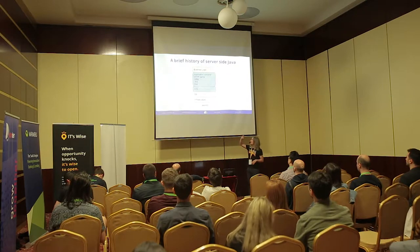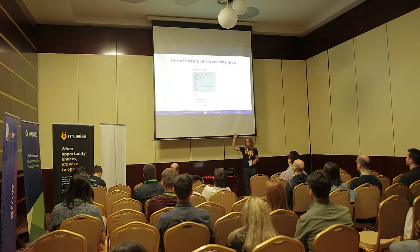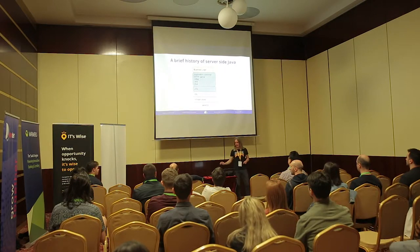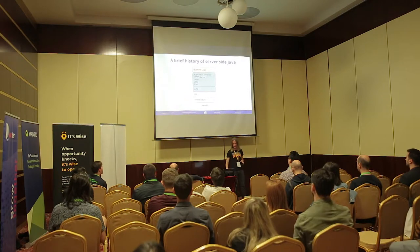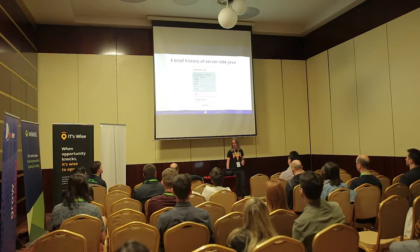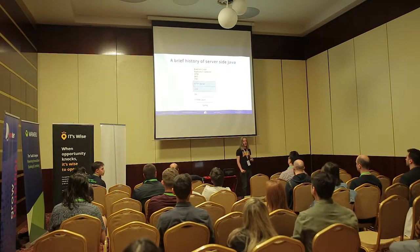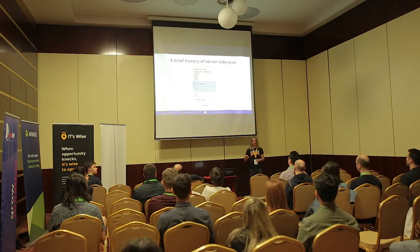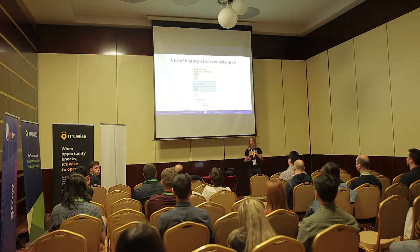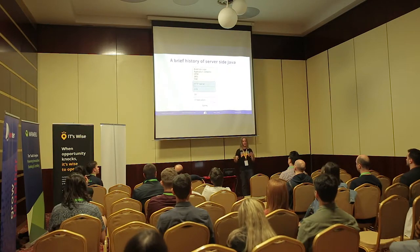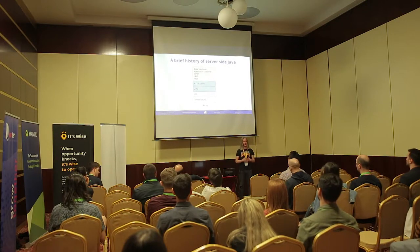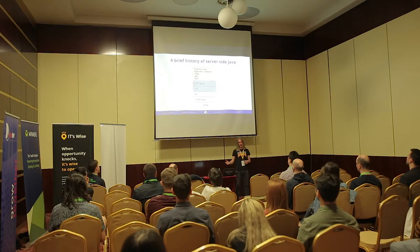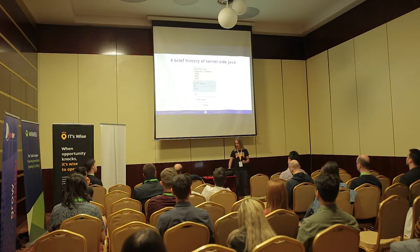In the Java EE layered model, the developer cares about business logic and everything below — application container, ORM, RMI, remote method invocation — is provided by the target environment. Then the famous Java library Spring came along and said: let's put much of that stuff into my own code. I can compile it, I can change versions of those things, and it will be in my control as a developer, not operations. That worked pretty well but meant more responsibility and work for developers.